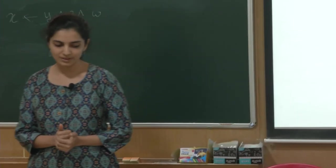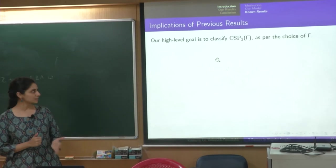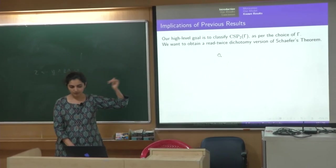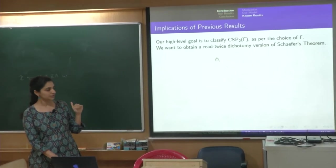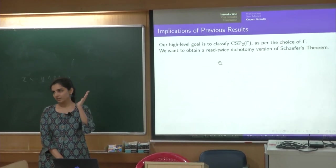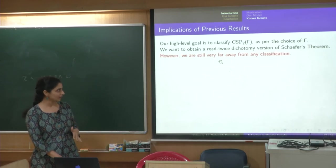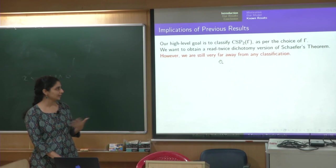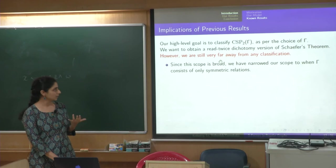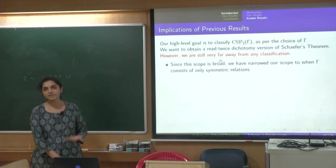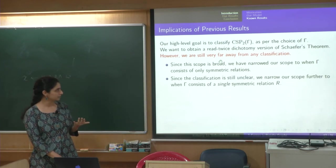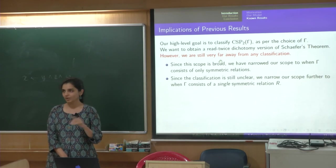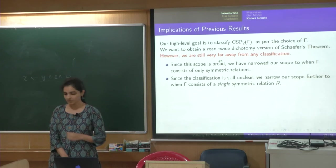So, now stating the results, this one more slide before I can state the results. The high level goal is to classify CSP2 gamma as per the choice of gamma. So, this would be the highest possible goal that we want to achieve, however, so ideally we would like the read twice dichotomy version of the Schaeffer's theorem. So, this would be a great achievement in this line of work, however we are still very far away from any such classification and when we are stuck over the years at a point, it is a good idea to look at some restrictions I guess. So, to narrow the scope, gamma consists only of symmetric relations and as Meena was saying, just a single symmetric relation, so that is the setup we are in and here also the result is not a complete classification, but some sort of a conditional classification which I can now state.